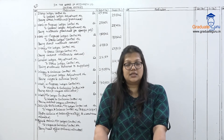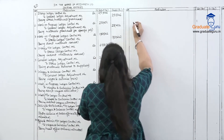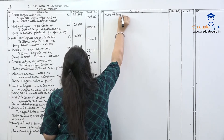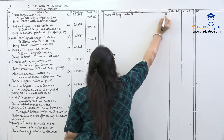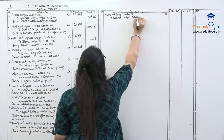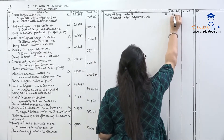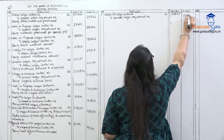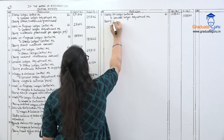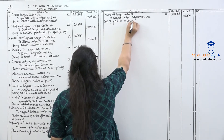Next, works overhead expenses means expenses incurred. Journal entry: Works Overhead Ledger Control Account debit, to General Ledger Adjustment Account. Amount: 1,28,832. Narration: being works overhead expenses paid.